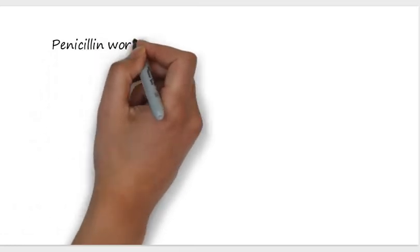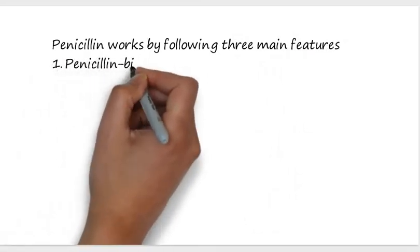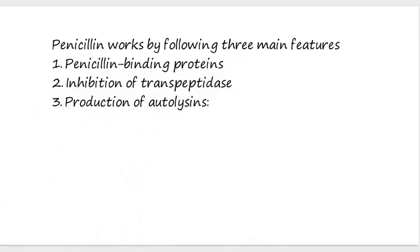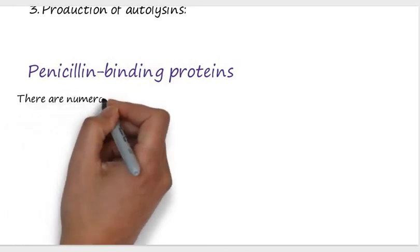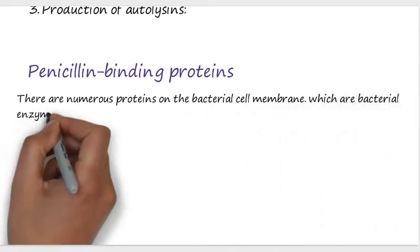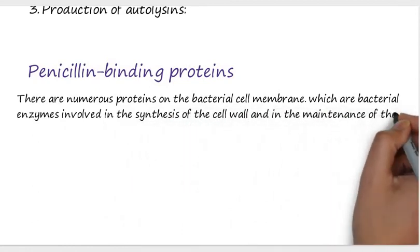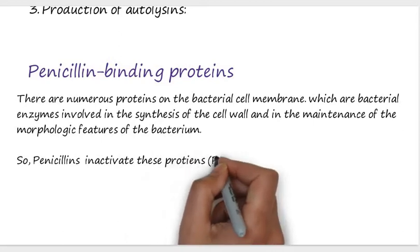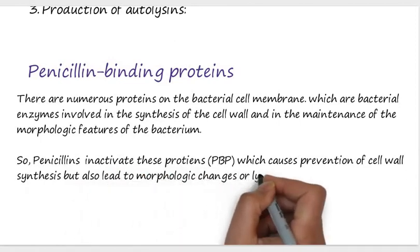Penicillin works by three main mechanisms. The first is penicillin binding proteins (PBPs). There are numerous proteins on the bacterial cell membrane which are enzymes involved in the synthesis and maintenance of the morphologic features of the cell wall. When penicillin is given, it inactivates these proteins, preventing cell wall synthesis and leading to morphologic changes or lysis of susceptible bacteria.